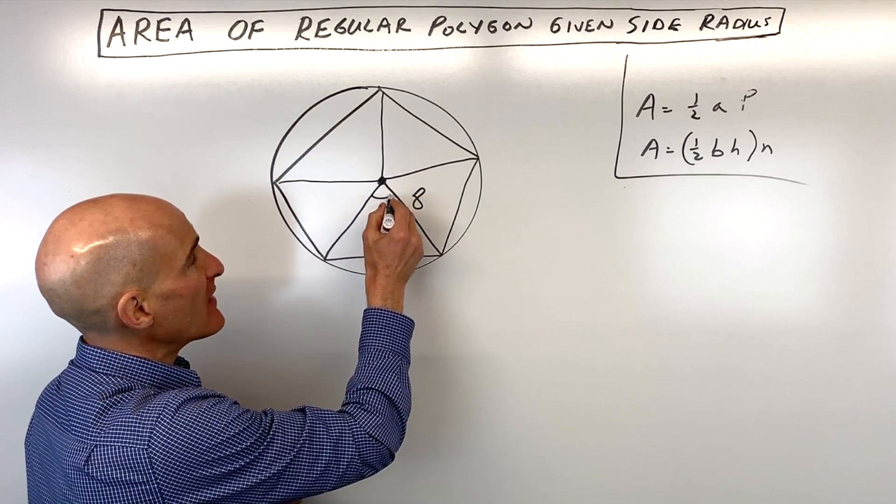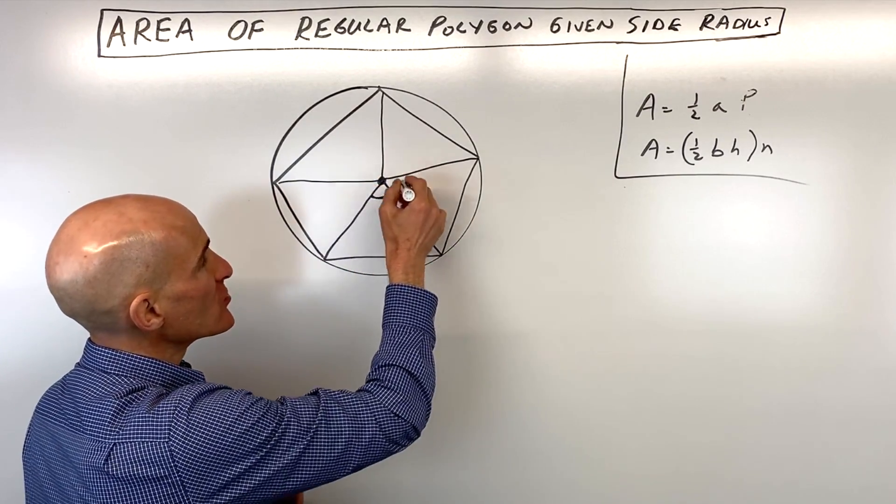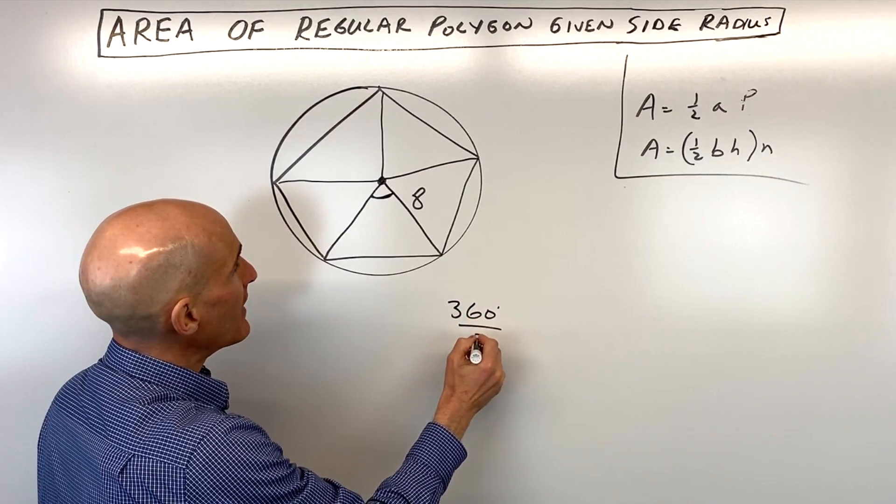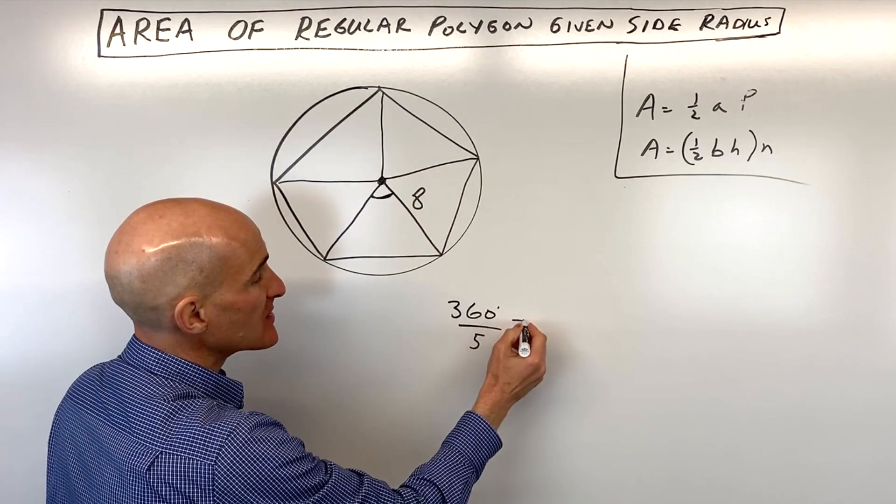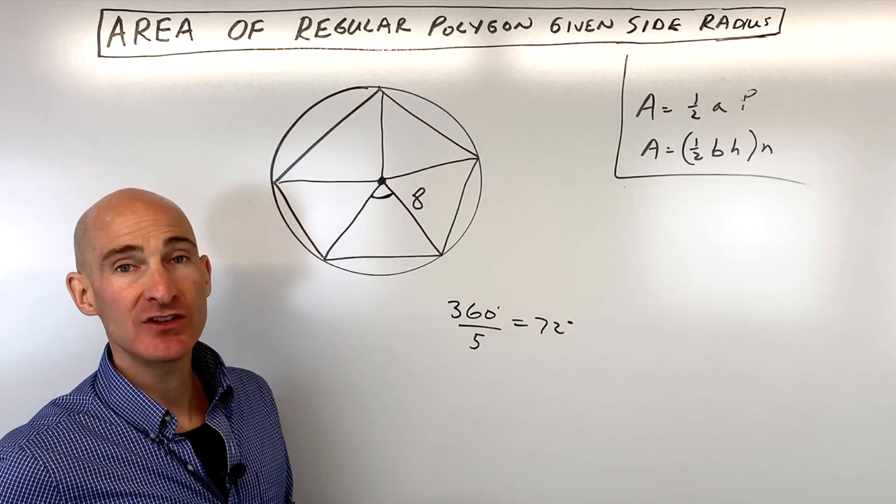So the first thing we want to do is we want to find that central angle. We know in a circle there's 360 degrees, so if we divide that by 5, since there's 5 of them, that's going to give us a central angle of 72 degrees, right?